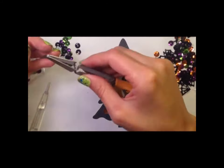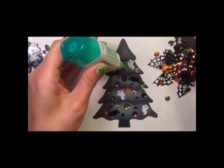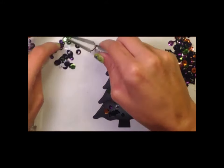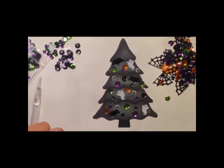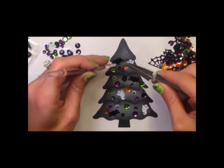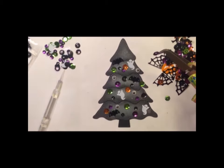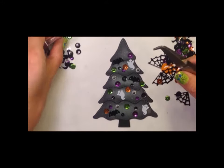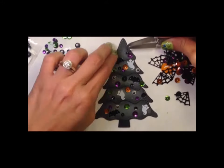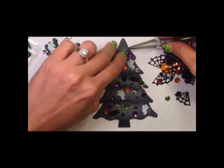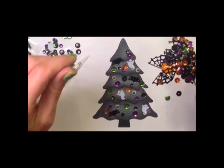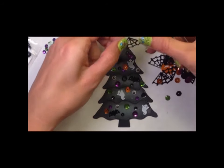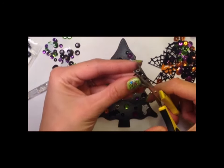I think our tree is coming together pretty good here. This adhesive, this Tombow Mono Multi, dries clear so you won't see all those little white bits. To finish off the tree I'm going to put one web on top. I really love these little webs. They are probably my favorite, they're so cute.